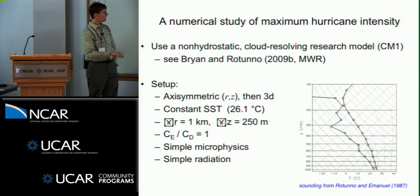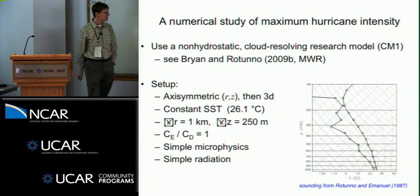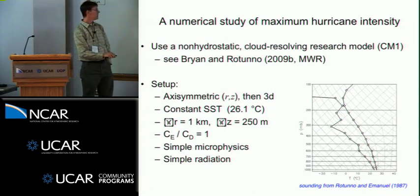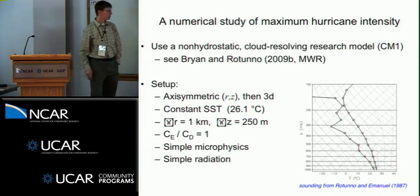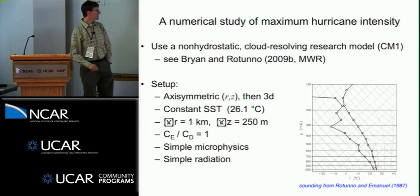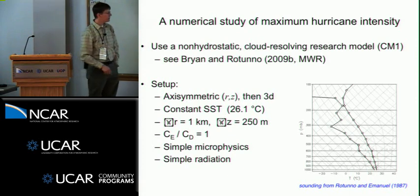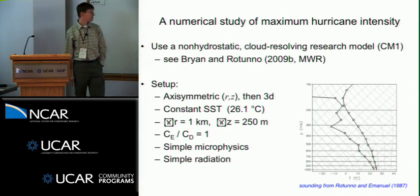The horizontal delta R is 1 kilometer. The delta Z is 250 meters unless I tell you otherwise. The ratio of the exchange coefficients for enthalpy and momentum or the drag is 1 by default. I'm going to show you what happens later when they change that. And then there's simple microphysics and radiation as following the Rotuno and Emanuel study.